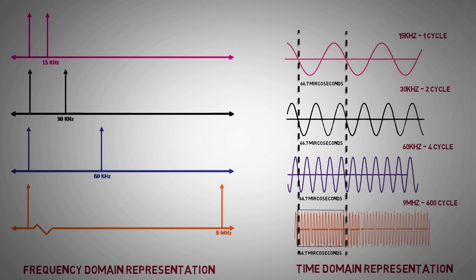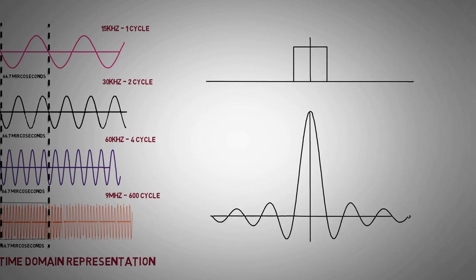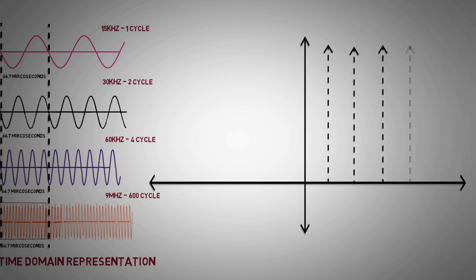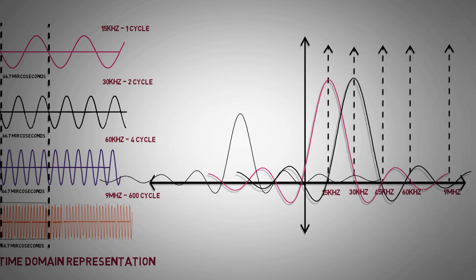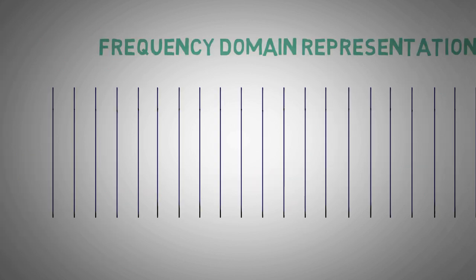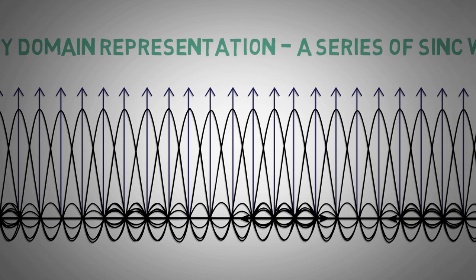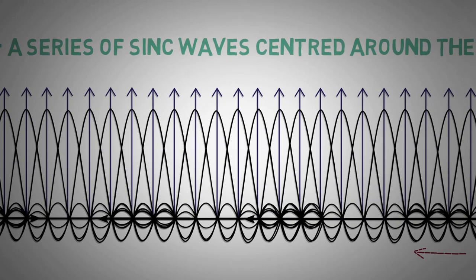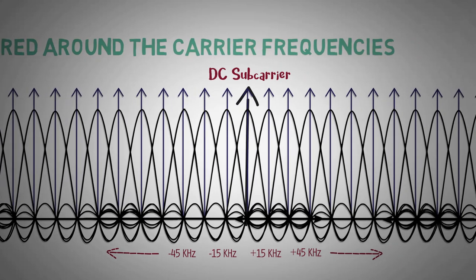As we know that a rectangular function can be represented in frequency domain as a sinc function which is centered around DC. When multiplying a signal to a carrier frequency in time domain, signal will be shifted in frequency domain by the same amount of carrier frequency. Thus we can represent these modulated sub-carriers in frequency domain as a series of sinc waves centered around the carrier frequencies.